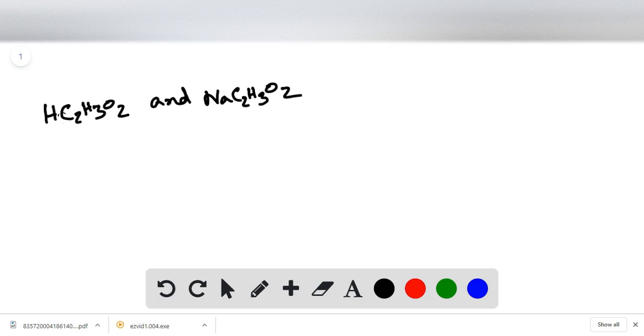In a mixture of these two substances, we can see that we have the C2H3O2 part in both substances. The presence of such an ion in both substances of a mixture actually affects the dissociation of the substances in that mixture.